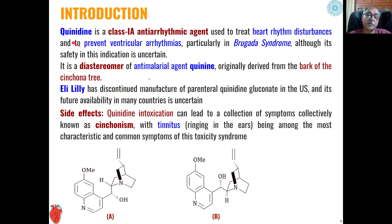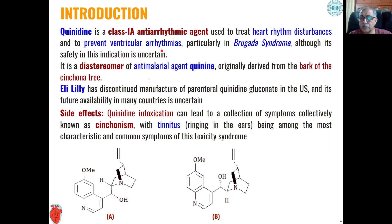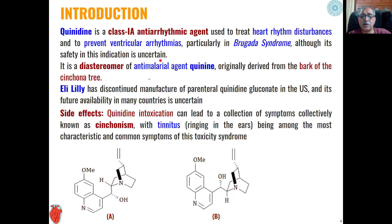Out of these two, quinidine is a Class 1A antiarrhythmic agent and is used to treat heart rhythm disturbances. It is also used to prevent ventricular arrhythmias, and out of those, particularly in Brugada syndrome. Although, as far as the safety of the drug is concerned, this is not a certain safe drug for these types of heart conditions.